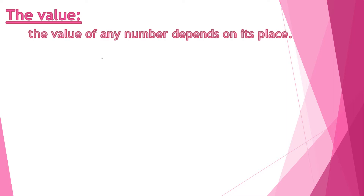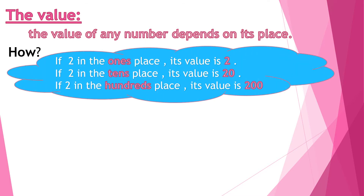If 2 is in the 1s place, its value is 2. If 2 is in the 10s place, its value is 20. If 2 is in the 100s place, its value is 200. In 1s, no zeros. In 10s, we put one 0. In 100s, we put two 0s.